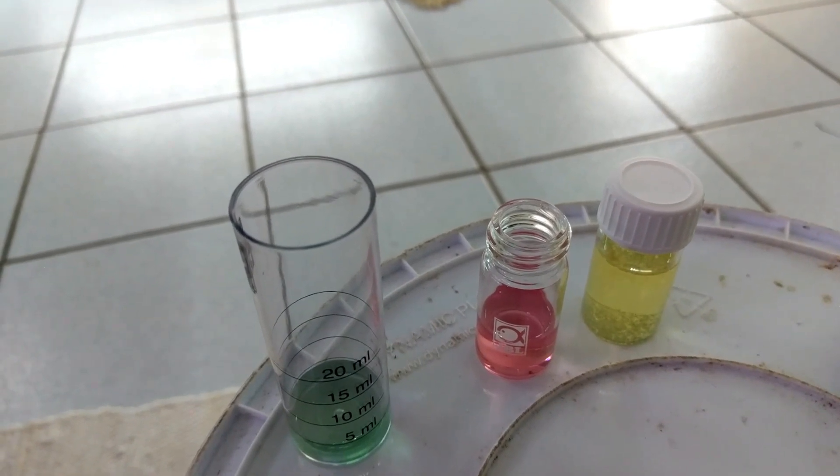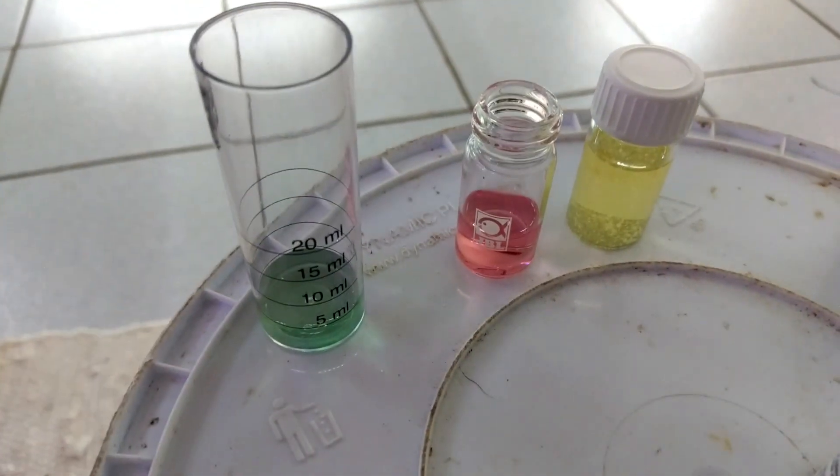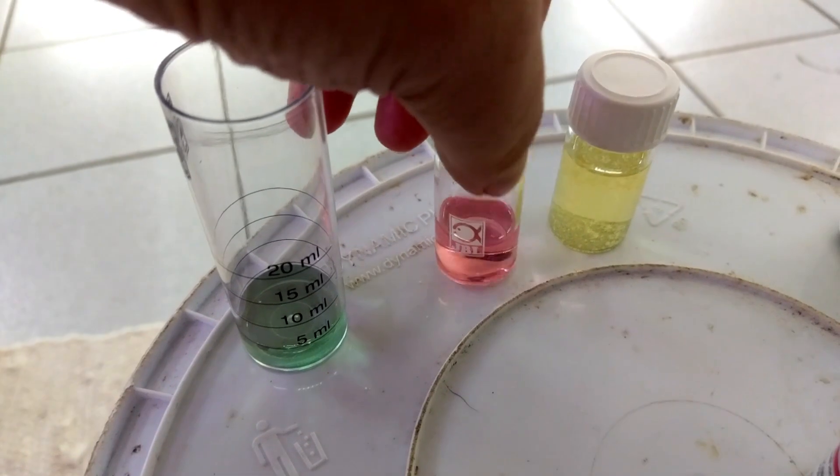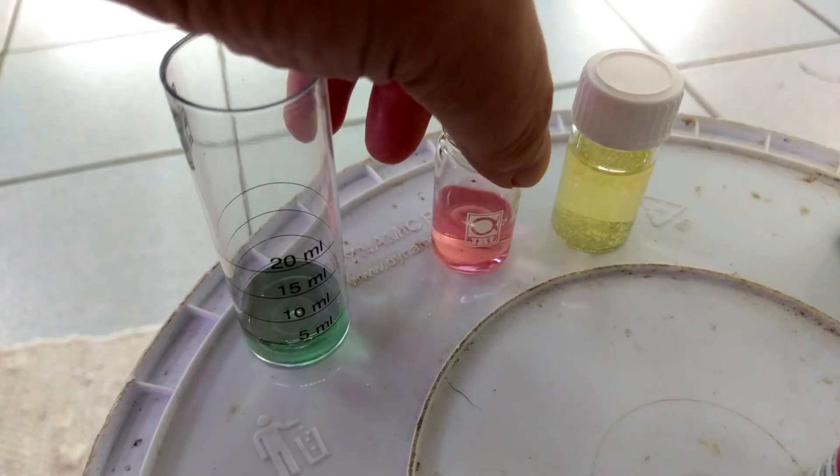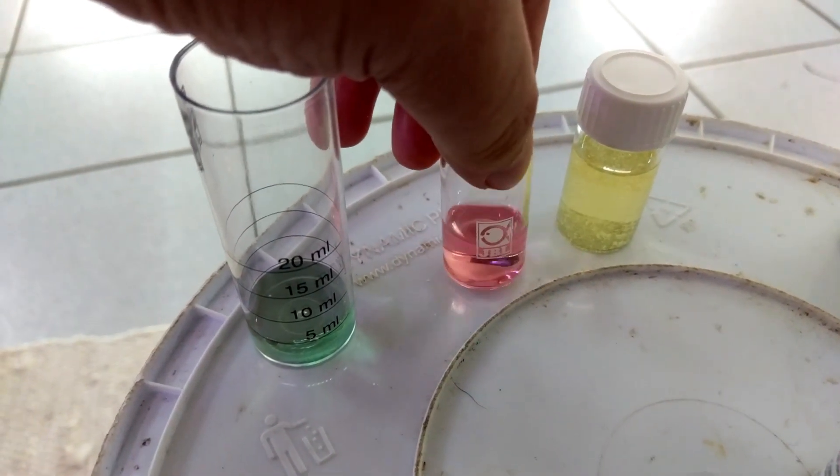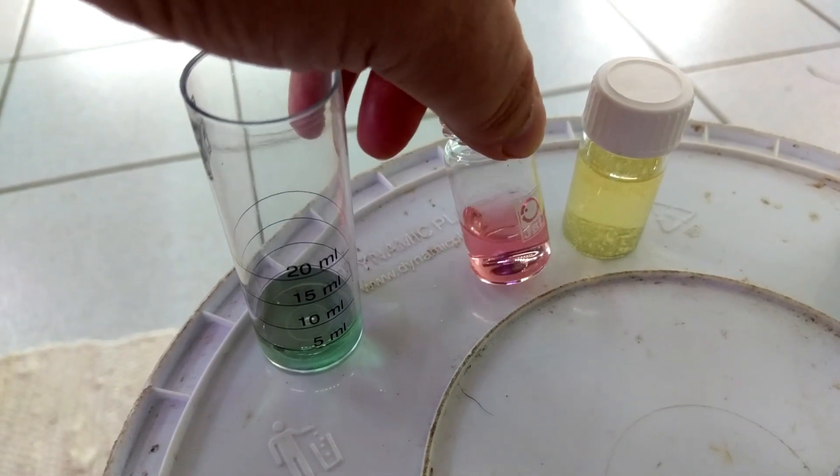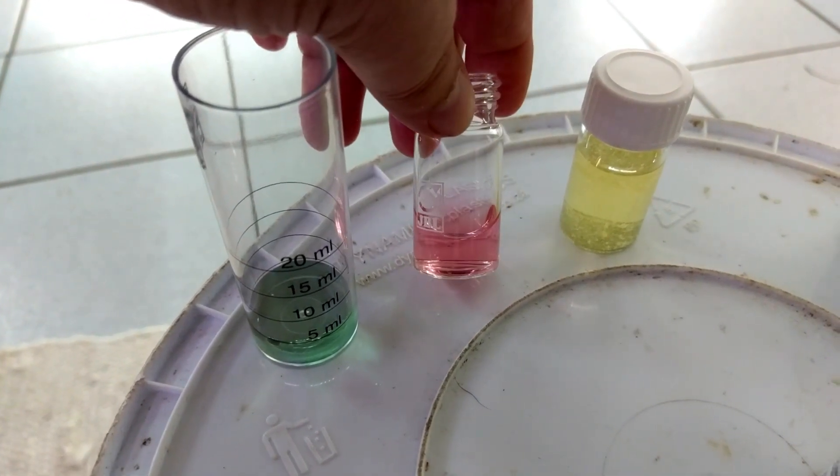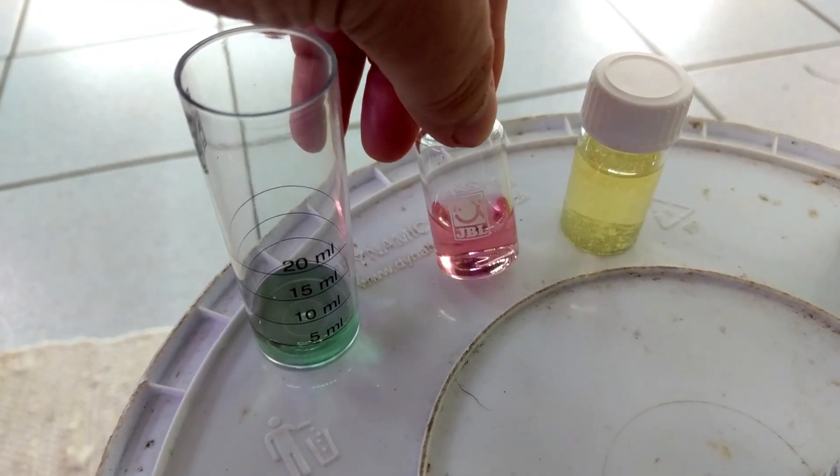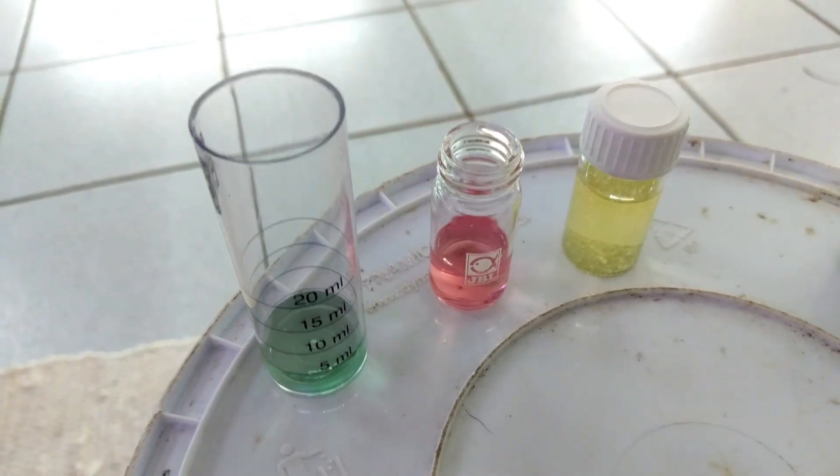So on the left, this one is pH which is around 7.5 to 8. This is ammonia in this pinkish color. It is highly toxic. I couldn't understand why my fish aren't doing well.